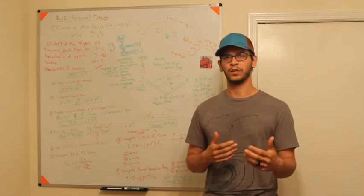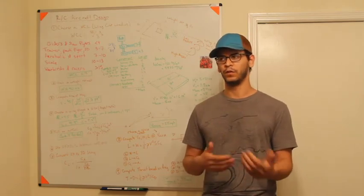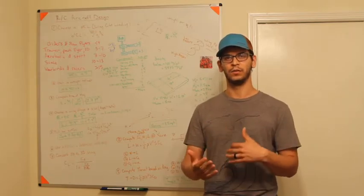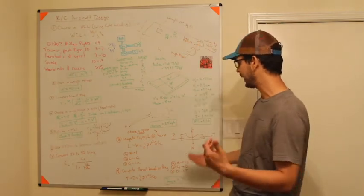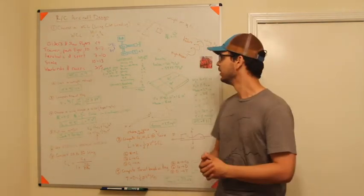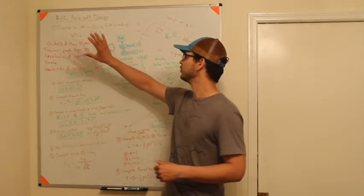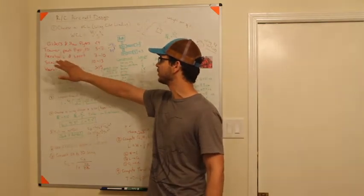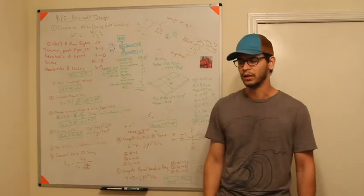I've taught a course called Radio Controlled Aircraft Design for about four years now, and I've sort of tweaked how I teach my students to design and build their own aircraft. This is my nine-step method on what to do. The first thing I tell students is to decide what they want their aircraft to do — a glider, a trainer, an aerobatic sport flyer, a scale warbird, or a racer.